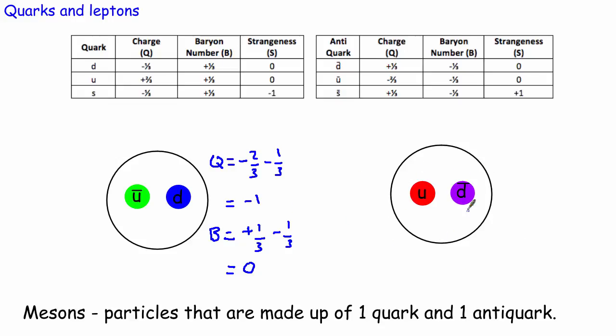The other meson shown is the antiparticle of the first — you can work out that its charge is plus one and its baryon number is still zero. So we've seen two types of quark-made particles: baryons made of three quarks, antibaryons made of three anti-quarks, and mesons which are a combination of one quark and one anti-quark. If we know the quark composition we can work out the baryon number and charge for each one.